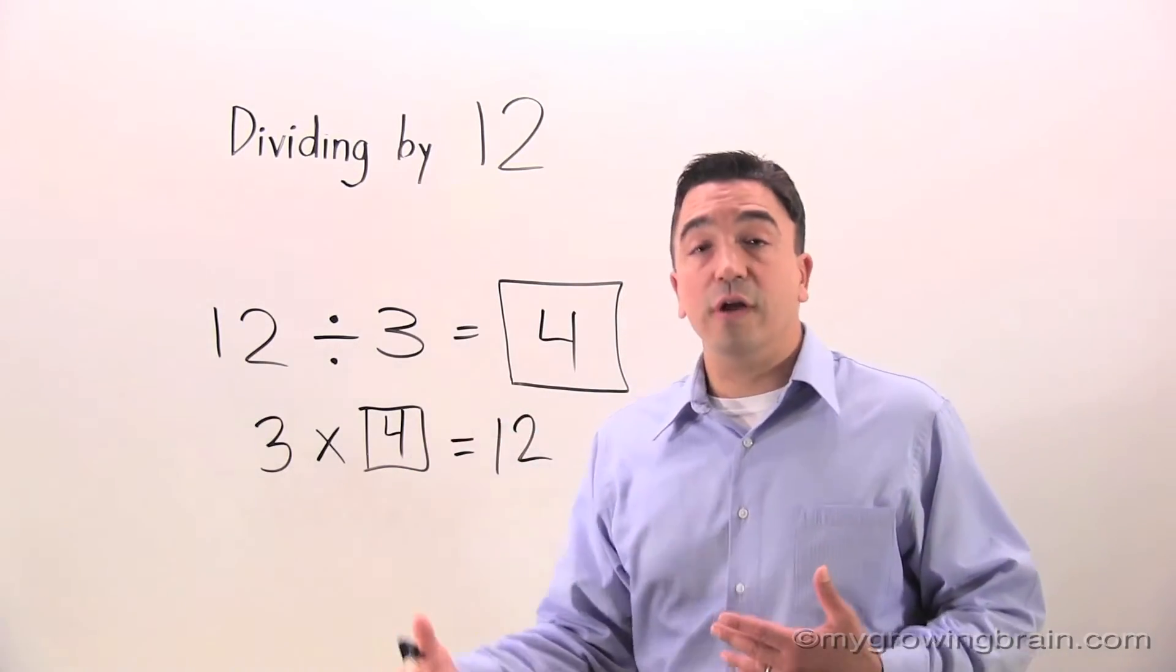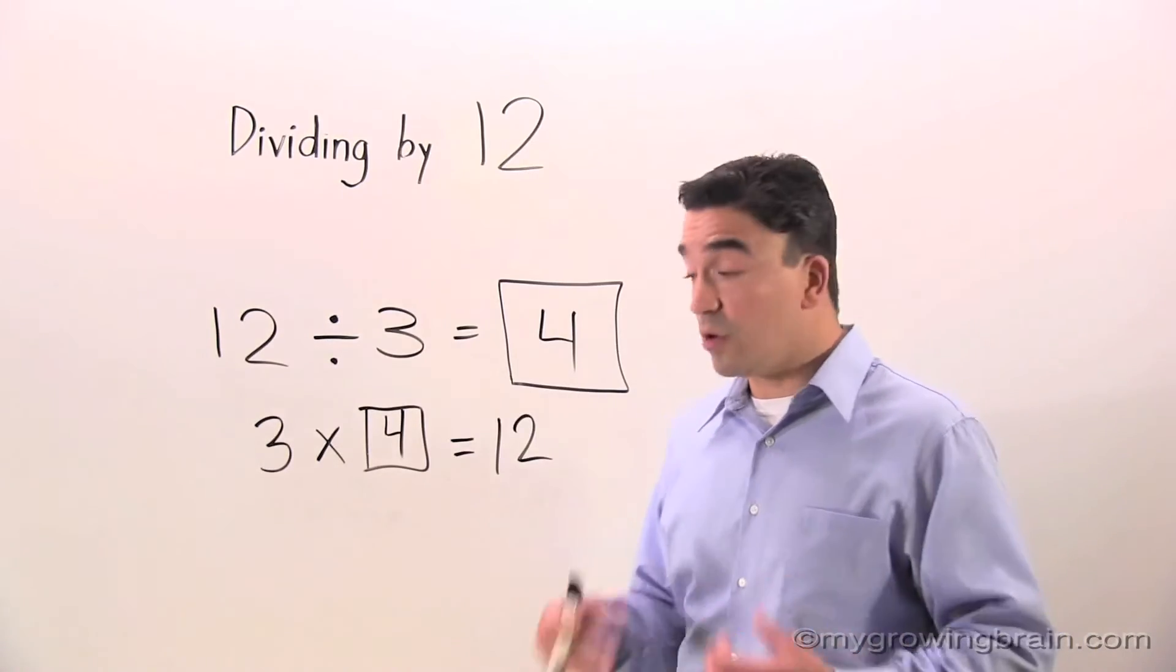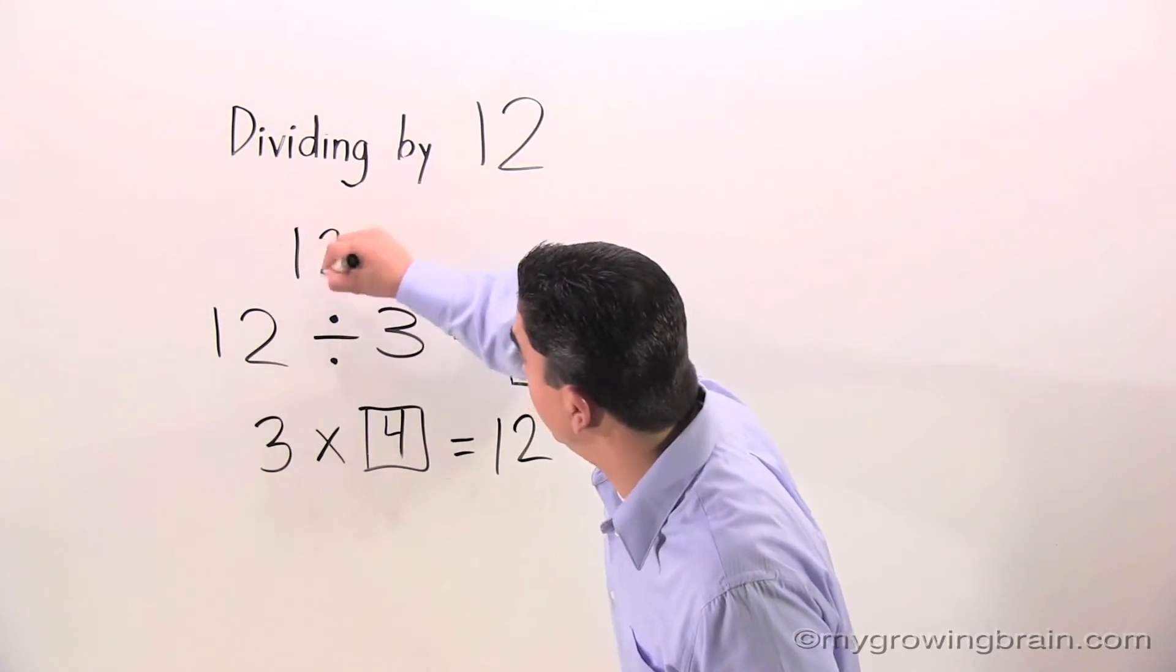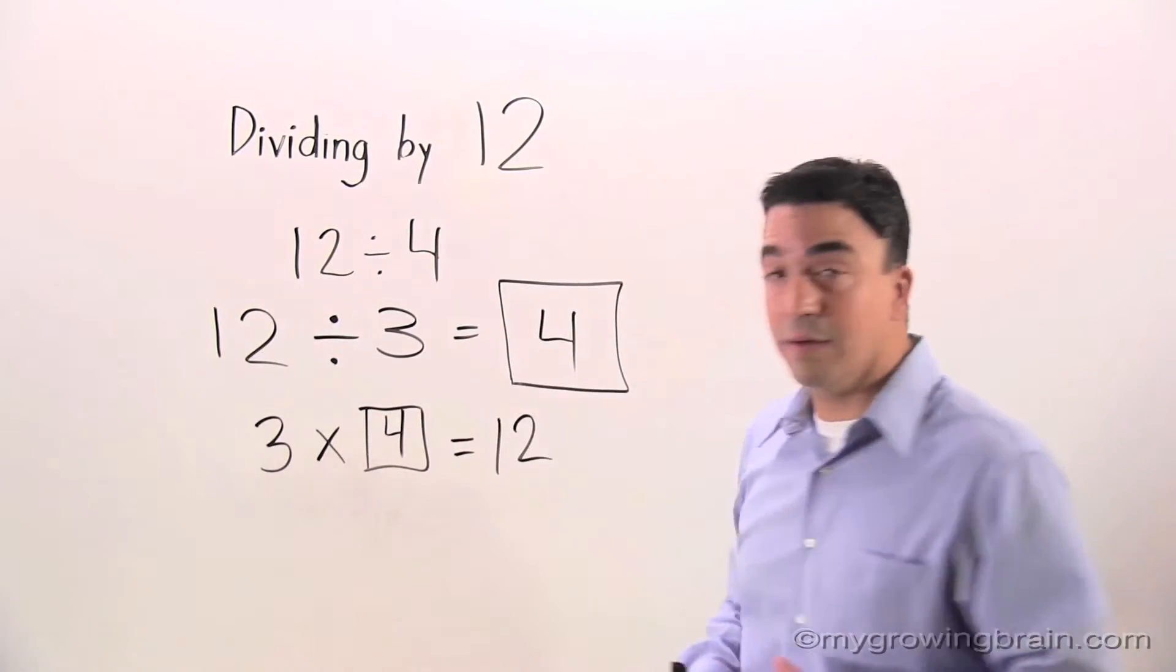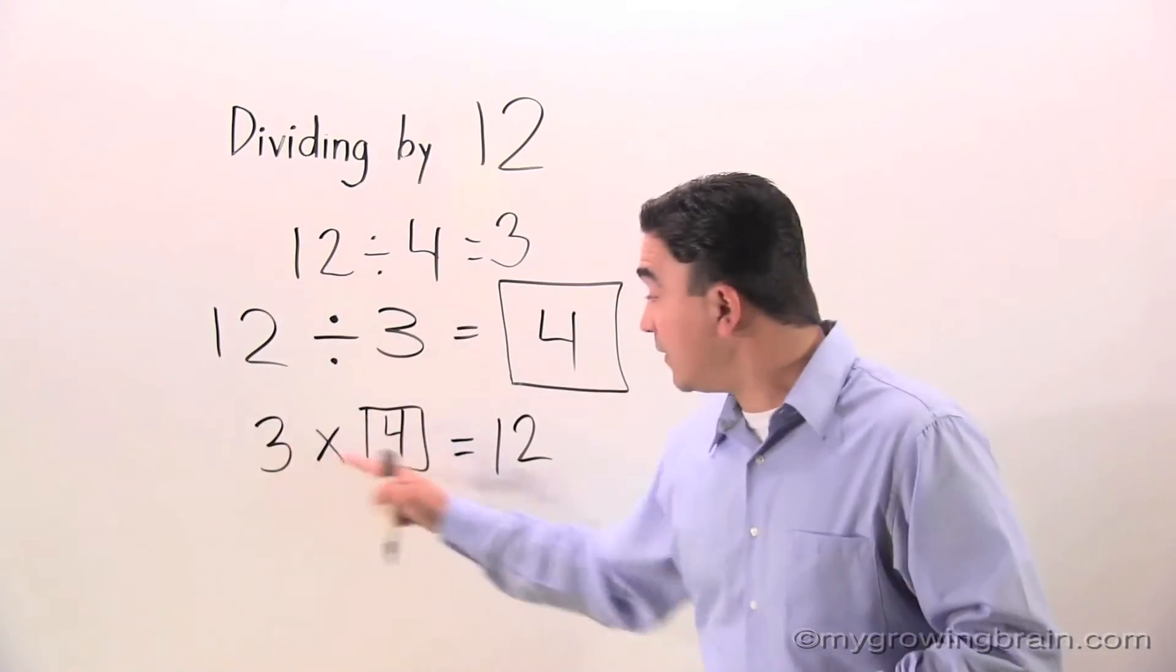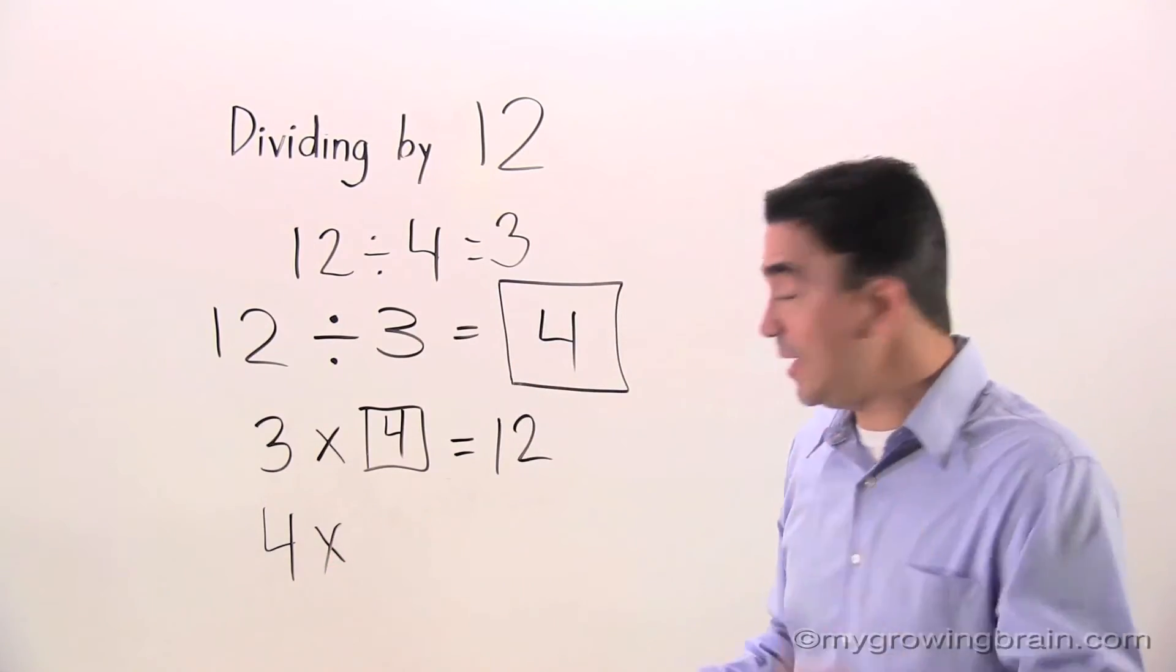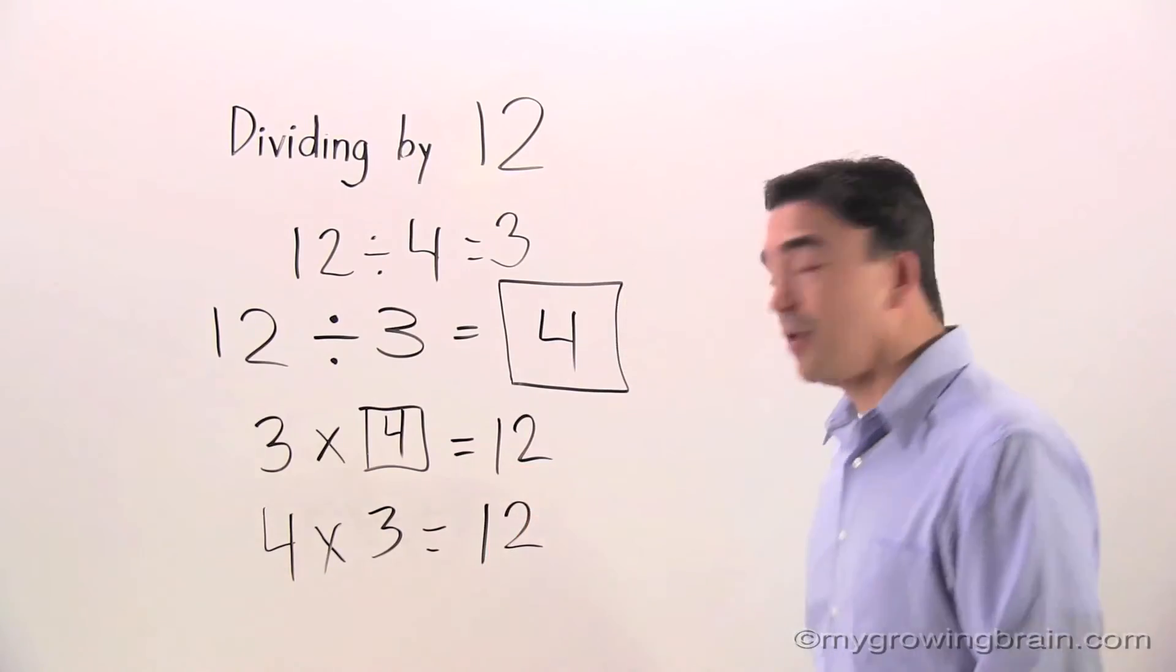To take it a step further conceptually, I think of fact families. Fact families really help you. It's a great resource. So let's think about this. If 12 divided by 3 equals 4, we also know 12 divided by 4 equals 3. And if 3 times 4 equals 12, we also know that 4 times 3 equals 12.